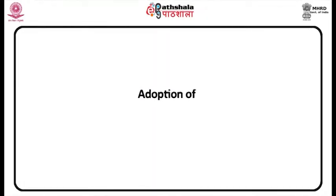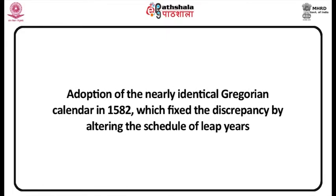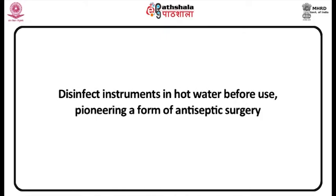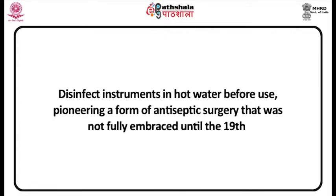The Julian Calendar: When Julius Caesar and the astronomer Sosigenes instituted the Julian system of aligning the calendar with the solar year, Caesar lengthened the number of days in a year from 355 to the now familiar 365, and eventually included the 12 months as we know them today. The Julian calendar was almost perfect, but it miscalculated the solar year by 11 minutes. These few minutes ultimately threw the calendar off by several days, leading to the adoption of the nearly identical Gregorian calendar in 1582, which fixed the discrepancy by altering the schedule of leap years.